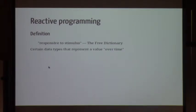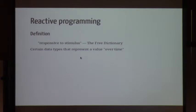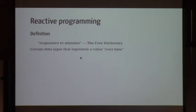Reactive programming lends itself to having a data type that represents a value over time. If you had a variable x and wanted to track mouse pointer movements across the x-axis, in reactive programming you could say: let x equal the x-axis values of the mouse. Then you can build a function on top of that, and as time progresses, x gets changed and your functions get notified that x changed.